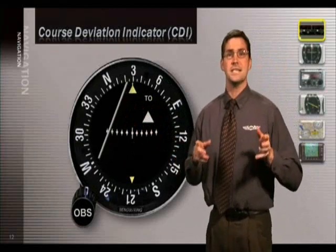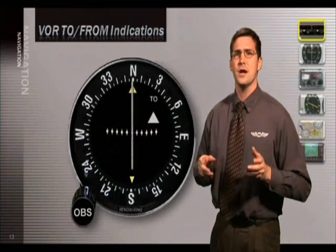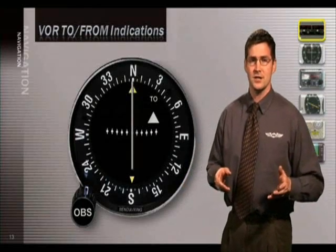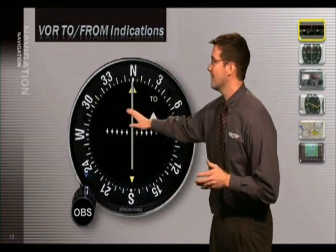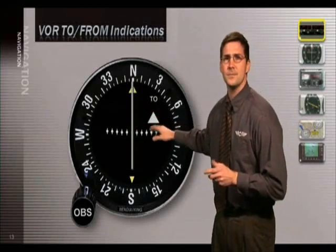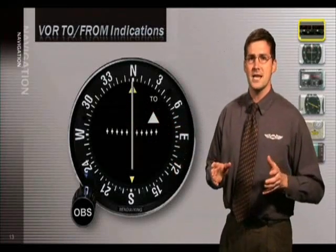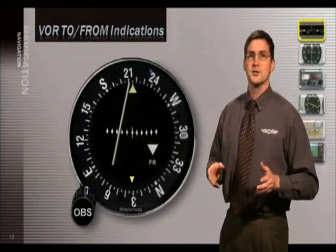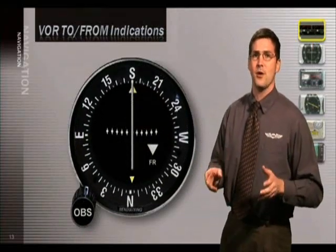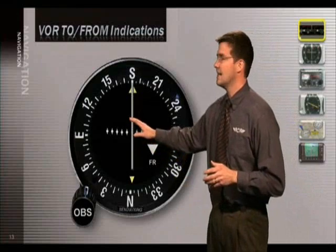Now this next animation illustrates the operation of the to and from flag. Again, we are directly south of the VOR station flying north. Note the needle is centered and we have a solid to indication. Next, if we set the OBS to 180 degrees south, note how the needle deflects. You'll also see a brief red nav flag and finally a solid from indication with the needle again centered.